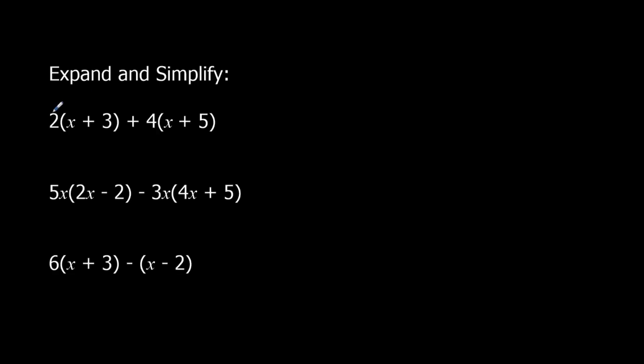So 2 times x here, 2x. 2 times 3 is 6. 4 times x, 4x. And 4 times 5, that's 20. So I've got 2x and 4x. I can add those up. So 2x plus 4x, that's 6x. And I've got 6 plus 20. So 6 plus 20 is 26. So that's the answer.